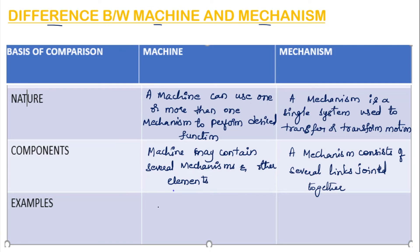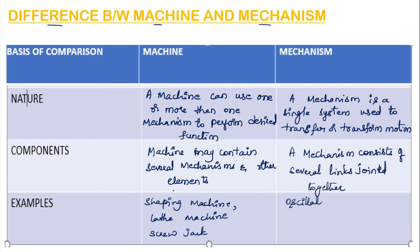Examples for machines are: shaping machine, lathe machine, and screw jack. What are the examples for mechanism? Oscillating cylinder mechanism and scotch yoke mechanism. These are the two examples for mechanisms. So these are some important differences between a machine and mechanism.